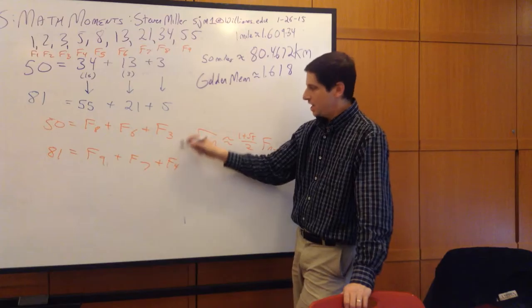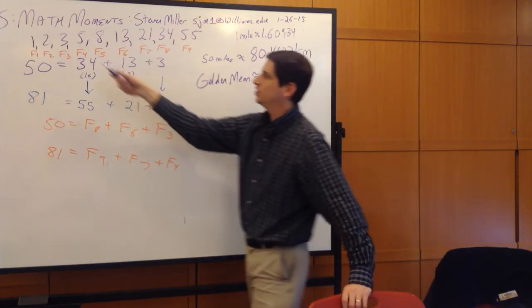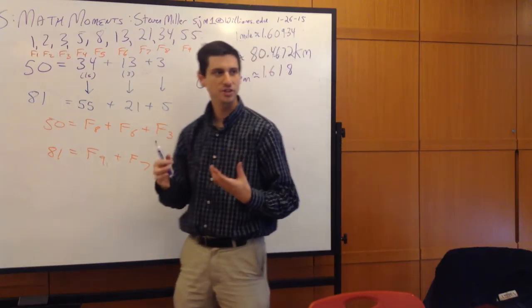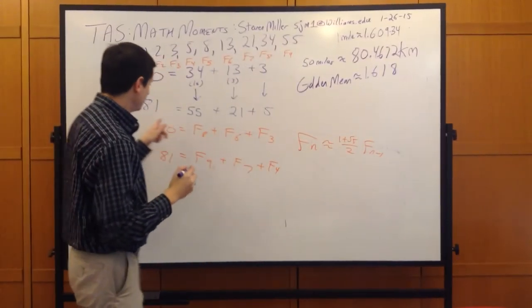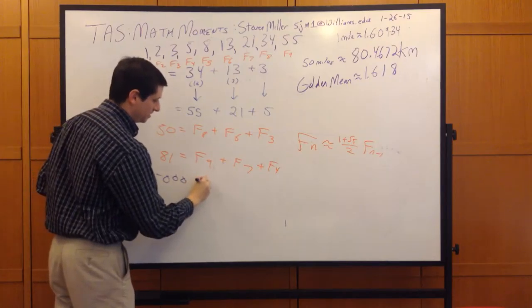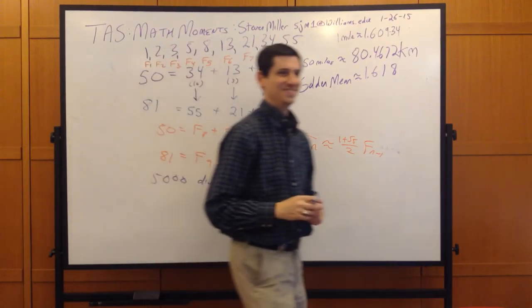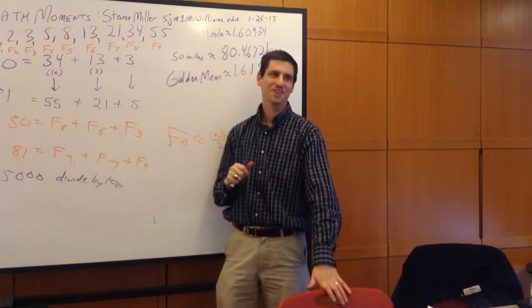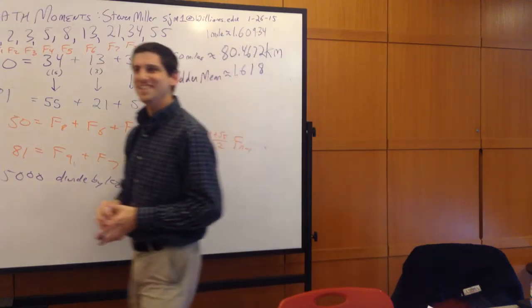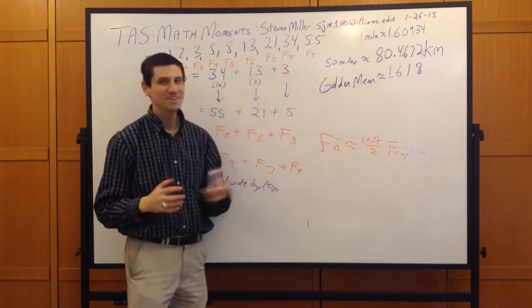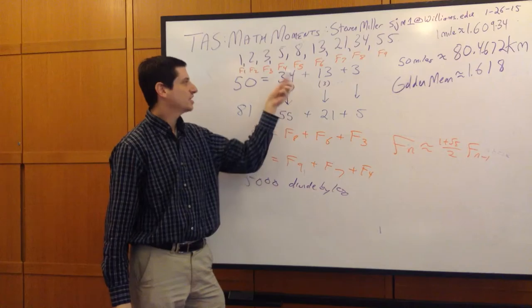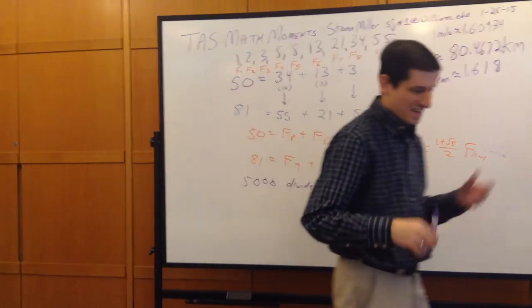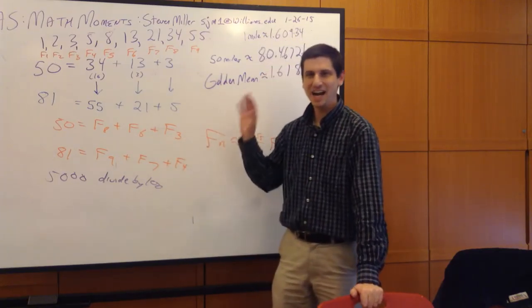The conversion works less well for small numbers — is 2 approximately 1.6 times 1? No. But the further up the Fibonacci sequence you go, the better the approximation. To go from kilometers to miles, just shift all the Fibonacci indices down. It's a fun coincidence and a great game for teaching kids to convert between kilometers and miles without multiplying by 1.6.